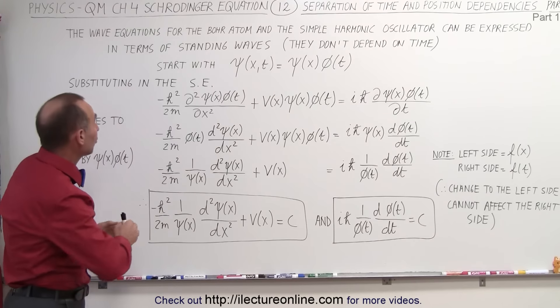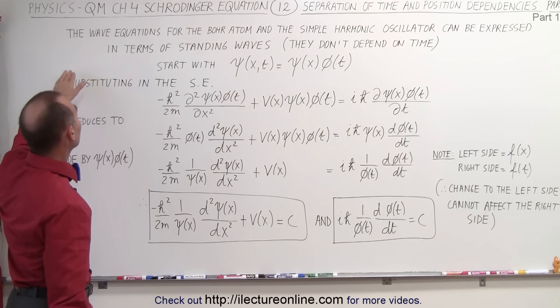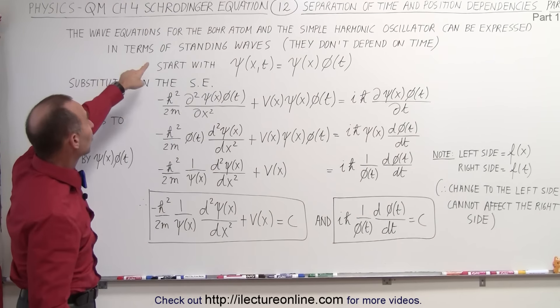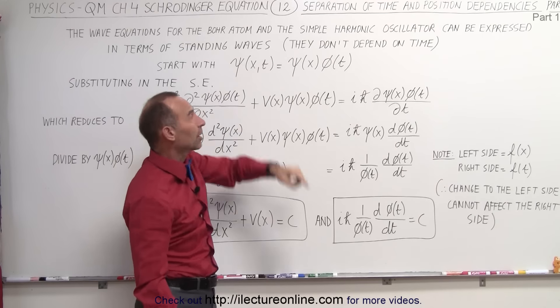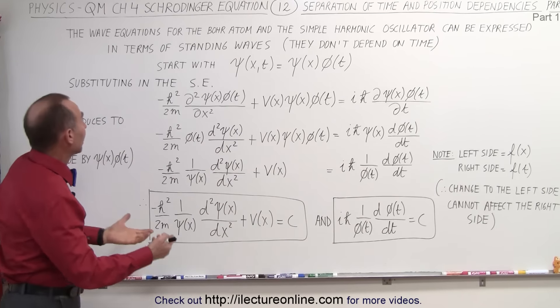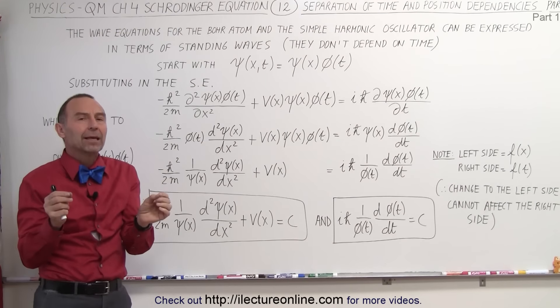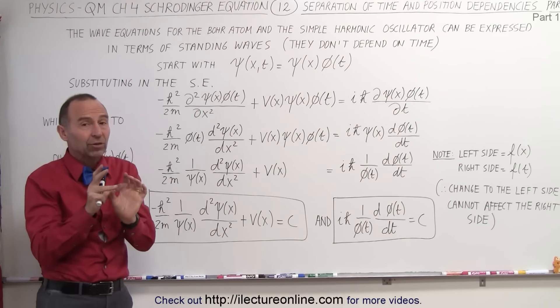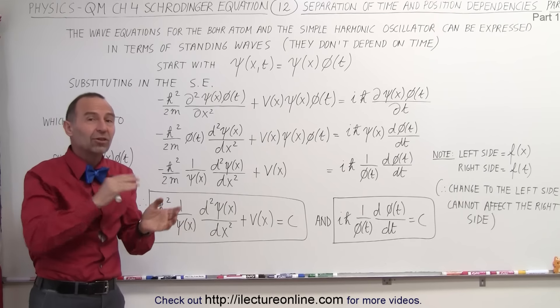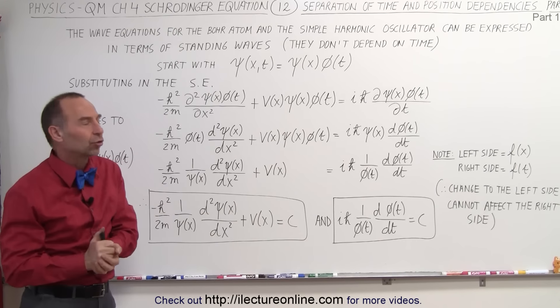The reason why we do that, there's plenty of very famous examples. For example, the wave equations for the Bohr atom and the simple harmonic oscillator can be expressed in terms of standing waves, so therefore they don't depend on time. There's definitely an advantage to be able to separate the dependencies on position and time to make the equations a lot easier to work with.